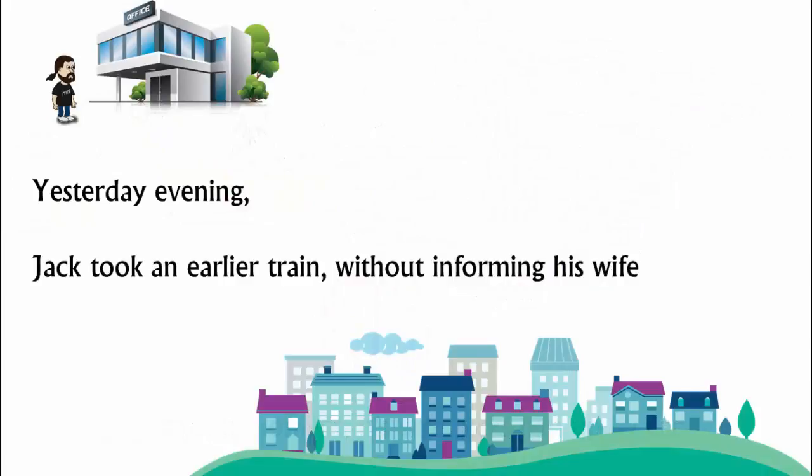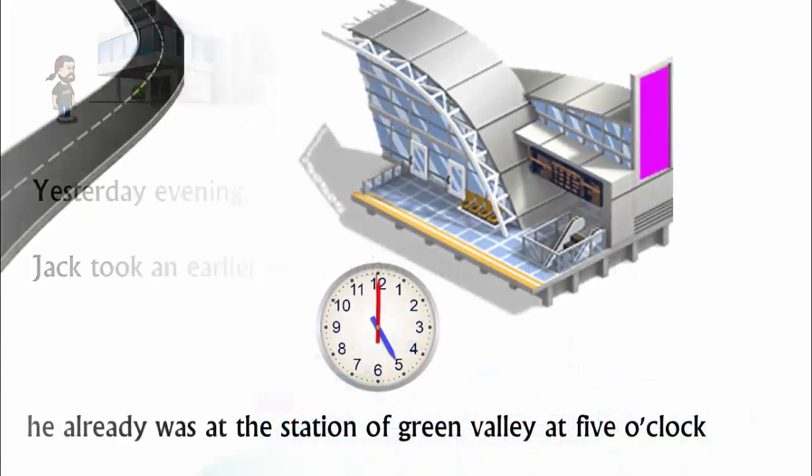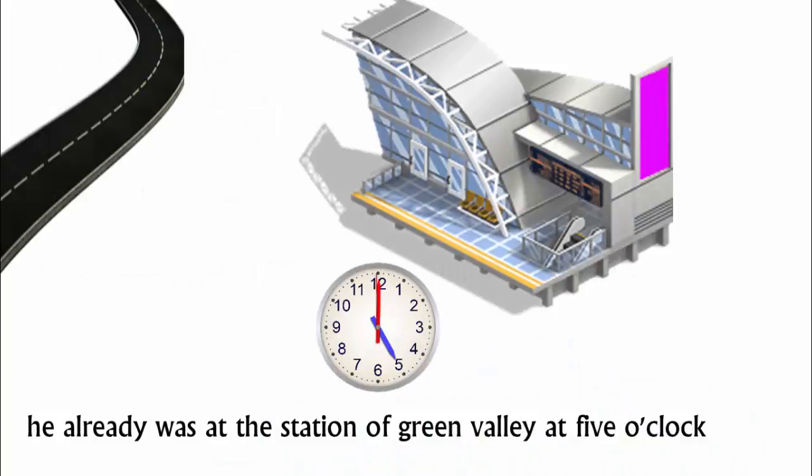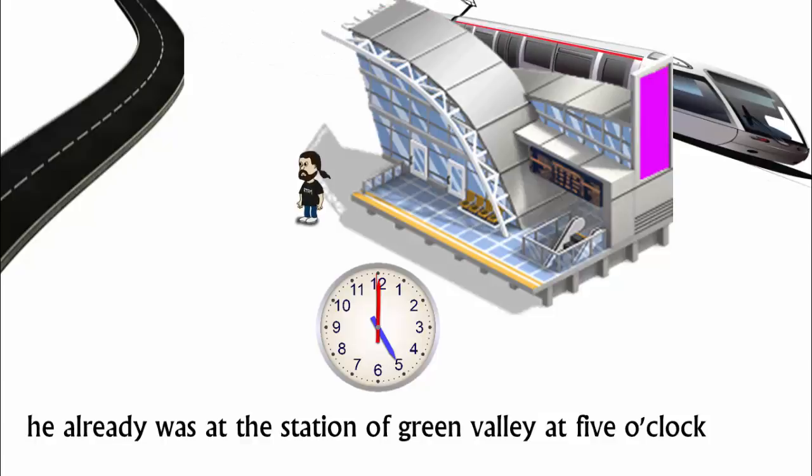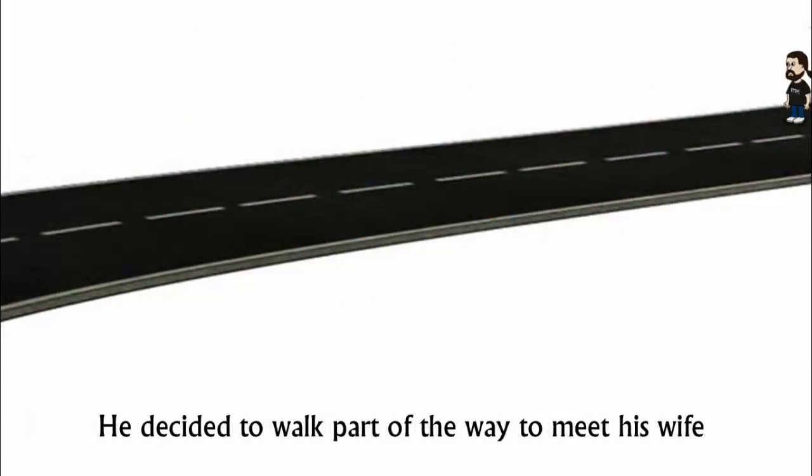Yesterday evening, Jack took an earlier train without informing his wife and therefore he already was at the station of Green Valley at 5 o'clock. He decided to walk part of the way to meet his wife. After some duration, he met the car with his wife and they drove home in car.